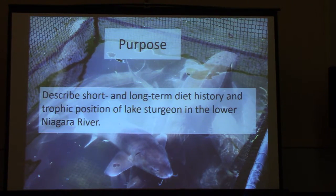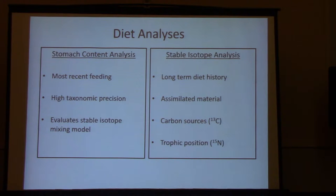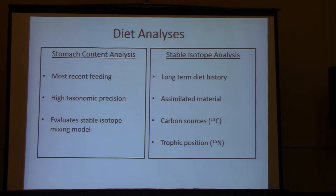The purpose of the study was to describe the short and long-term diet history and trophic position of lake sturgeon in the lower river. To do that, we employed two methodologies: stomach content analysis and stable isotope analysis. Stomach content analysis gives you the most recent feeding — what they ate in the past few hours — and also fairly high taxonomic precision, and it can be used to evaluate your stable isotope model. Stable isotope analysis gives you an idea of their longer-term diet history and only takes into account material actually assimilated into tissue, not just ingested. We used carbon, whose signature tells you about carbon sources, and nitrogen, which gives you an idea of the consumer's trophic position.